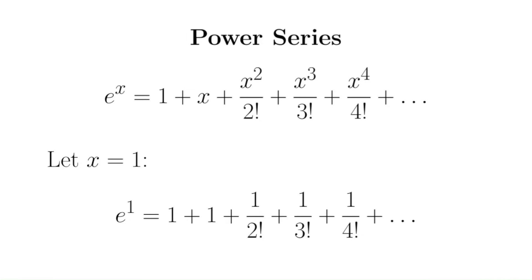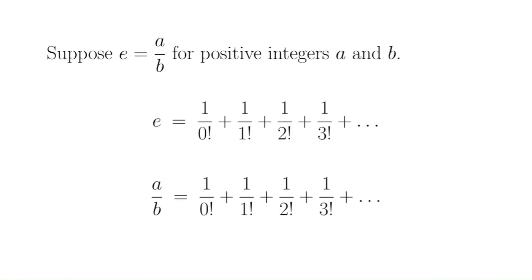So how can we show that e is irrational? We're going to do a proof by contradiction. We suppose that e is rational — that e can be written in the form a over b, where a and b are positive integers — and we're going to show that this assumption leads to a contradiction. We assume the opposite of what we're trying to prove and show that it leads to some kind of absurdity, something that can't possibly be true.